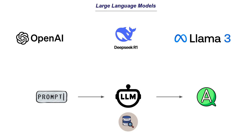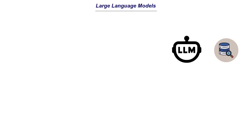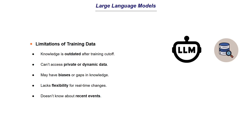Think about opening ChatGPT and asking it to explain machine learning or deep learning. The LLM has been trained on so much data across several domains and now it answers questions about that. But there are some limitations that come with this training data. Let's say we have a pre-trained LLM — one limitation is that knowledge is outdated after the training cutoff.